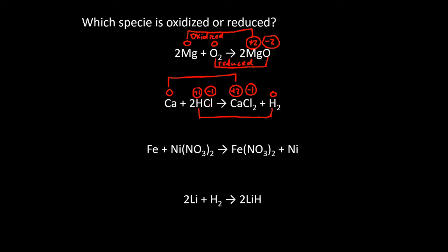That's perfectly fine — not everything in the reaction has to be oxidized or reduced. As long as one thing is being oxidized and one other thing is being reduced, that's all we need. We don't need every single thing involved in the reaction to be oxidized or reduced. So it's perfectly fine that the chlorine is the same on the left as on the right. The calcium is being oxidized, and the hydrogen is being reduced.